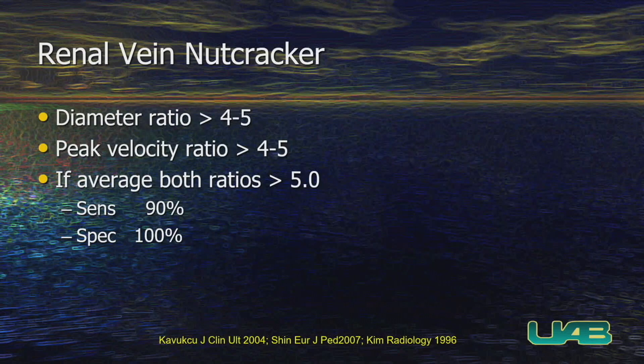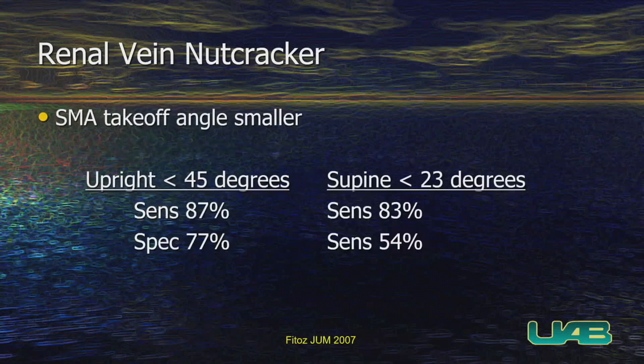How do we diagnose it? Use a ratio greater than 4-to-1 of the diameters, or a ratio of the peak velocities greater than 4-to-1. If you have both ratios over 5, you're at 100% specificity and 90% sensitivity — pretty good numbers for renal vein nutcracker. You can also look at the actual origin of the SMA coming off the aorta. If you're upright at a 45-degree angle, and they're less than 45 degrees in the upright position, you're at 87% sensitivity for the diagnosis.